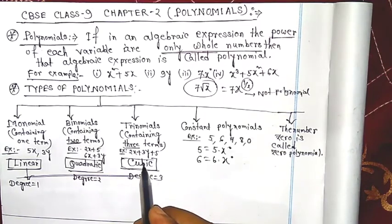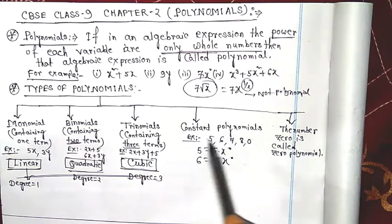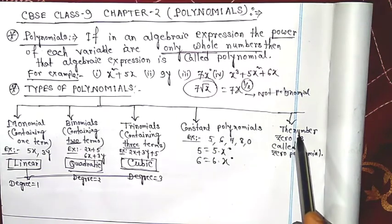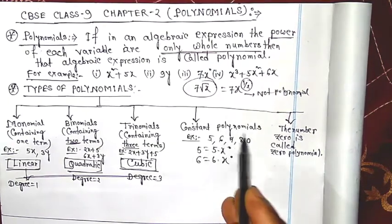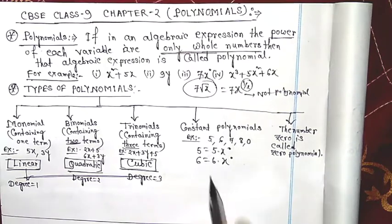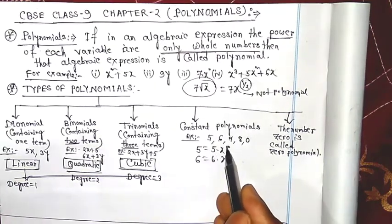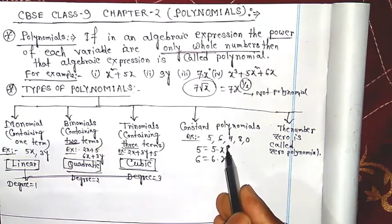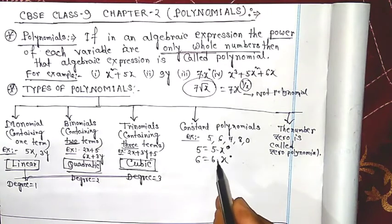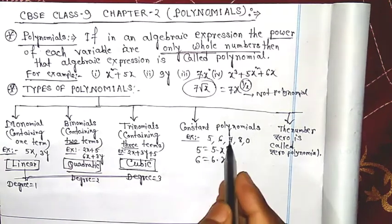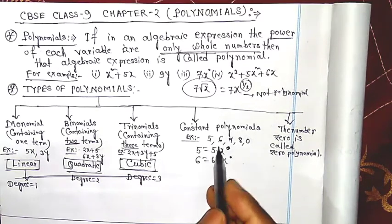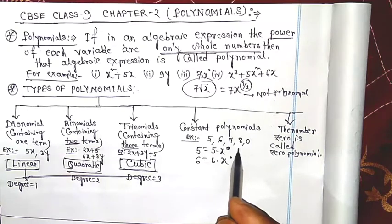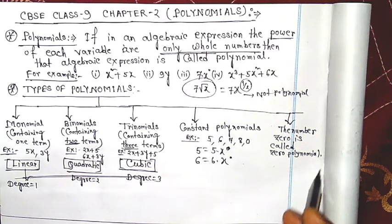There are also two more types: constant polynomial and zero polynomial. Constant polynomials are constant numbers like 5, 6, 7, 8 — because 5 can be written as 5 into x to the power zero, and zero is a whole number. So every constant is a polynomial. The number zero is called the zero polynomial.